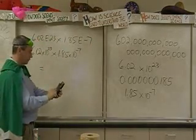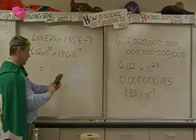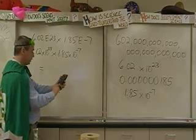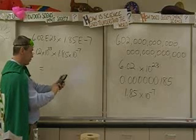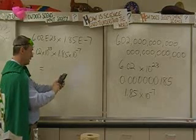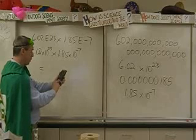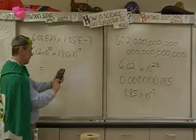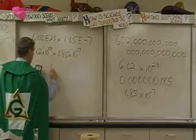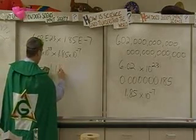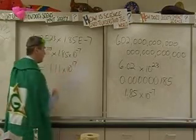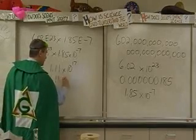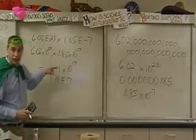So let me punch that in to see how it looks. We have 6.02, and EE to the 23. Oops, I did that wrong. 6.02, EE to the 23, times 1.85, EE to the negative 7. And what I have here, my friends, is 1.11 times 10 to the 17th. On the calculator, it says 1.11E17. And I know it means this.